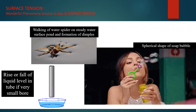Hello students. In this part, let us study about a very interesting property shown by a liquid at rest called surface tension. We observe various wonderful phenomena around us like insects walking on a steady water surface, or the liquid level in a capillary tube immersed in a liquid either rises or falls down, or soap bubbles always assume a spherical shape. All these phenomena arise due to surface tension.